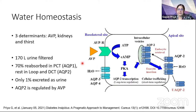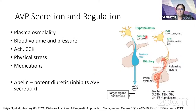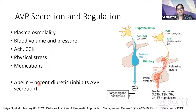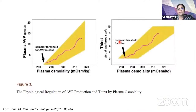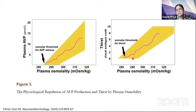Aquaporin-2 expression is regulated by arginine vasopressin, which is secreted from neurons in the hypothalamus and translocated across neuronal axons to be secreted into circulation from the posterior pituitary. The key regulator of AVP secretion is plasma osmolality, but it also responds to changes in blood volume, blood pressure, physical stress, and several medications. More recently, apelin, a potent diuretic peptide, has been identified which inhibits arginine vasopressin secretion.